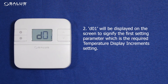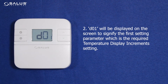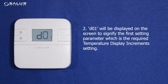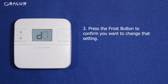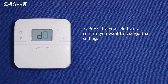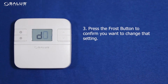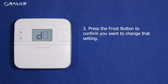Step 2: D01 will be displayed on the screen to signify the first setting parameter, which is the required temperature display increments setting. Step 3: Press the frost button to confirm you want to change that setting.